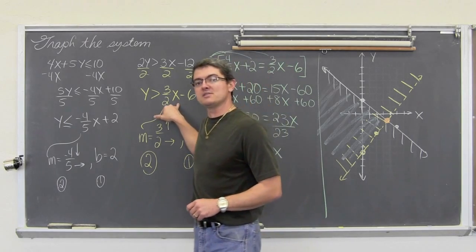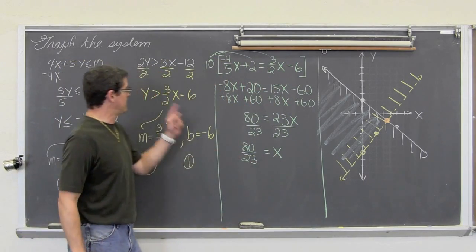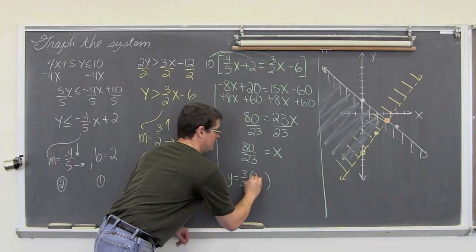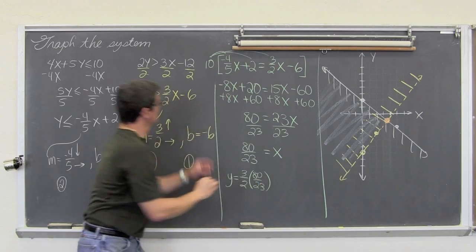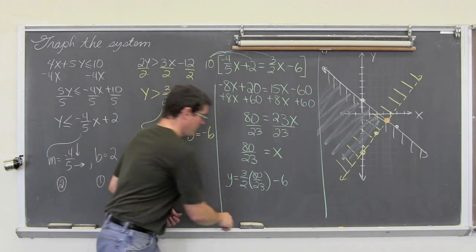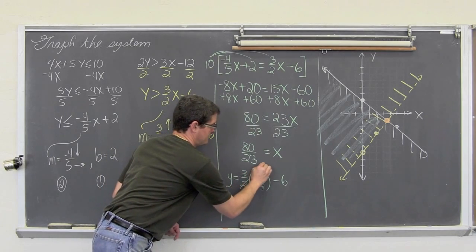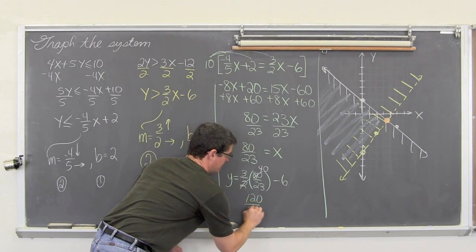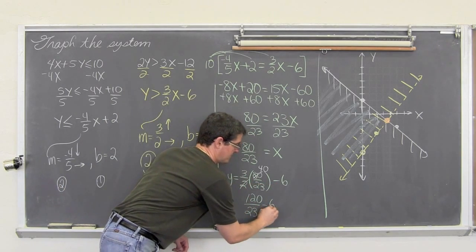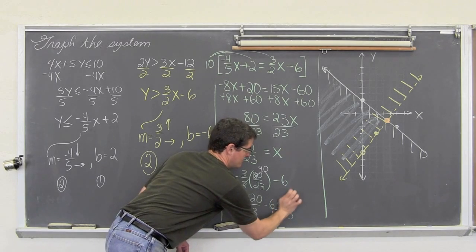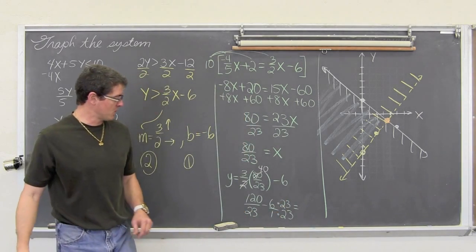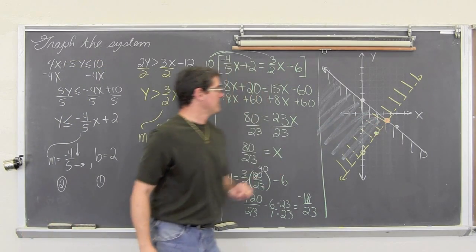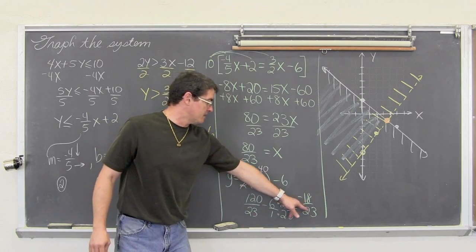We plug x = 80/23 into the equation y = 3/2 x minus 6. The 2 and the 80 cancel to give 40, so we have 3 times 40 = 120 over 23. Then subtracting 6 requires a common denominator of 23, giving a y-value of negative 18 over 23. So the intersection point is (80/23, −18/23).